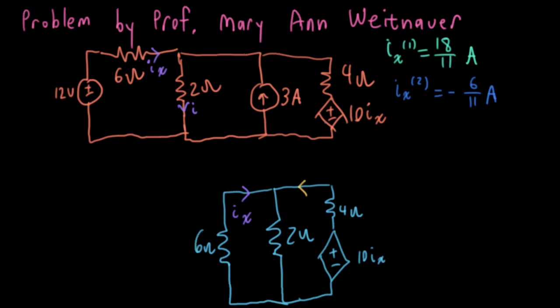Okay, so what is this current flowing out of the positive terminal? Well, by Ohm's law, that would be the voltage, which is 10 IX over the resistance of this combination, which we just figured out was 11 over 2, or in other words, 20 over 11 IX.